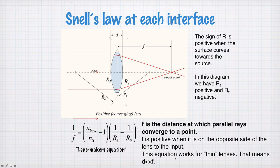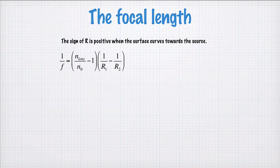The other important thing about this equation is that it works for thin lenses. That means that d, the thickness of this lens, must be much, much less than the focal length. This is also known as the thin lens equation. This is our equation for designing and building lenses.